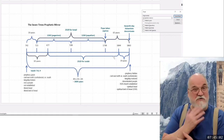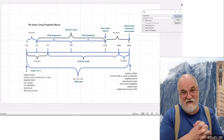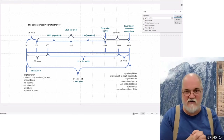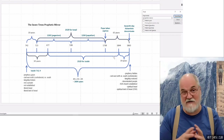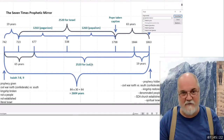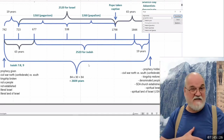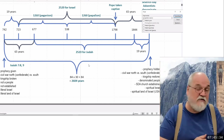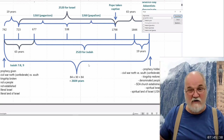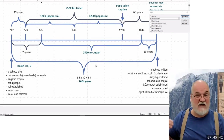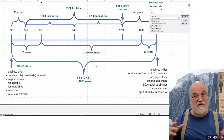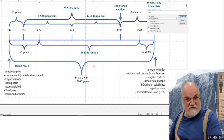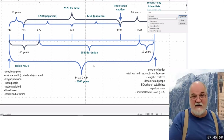That's why I put Israel on top and Judah on the bottom — that's what the Bible says to do. When we do that and we take Isaiah 7, verses 8 and 9 — the civil war that's happening there, 65 years — we can put it at the beginning and at the end. So we have this mirror that clearly marks a prophecy given in 742 BC, and the prophecy is going to be mirrored on the 1863 chart. This is a civil war: in the ancient history, the north is confederate; in American history, it's the south that's confederate. This kingship is going to be broken in one, restored in the other. They're going to not be a people, but we're now going to be a denominated people — the SDA church is established.